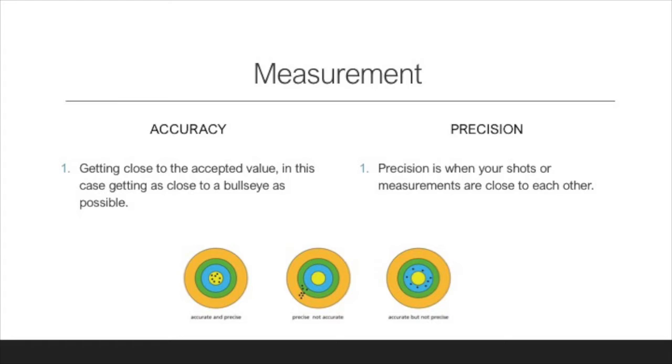Accuracy and precision in measurement. Accuracy is getting close to the accepted value, in this case, getting as close to a bullseye as possible. Precision is when your shots or measurements are close to each other. Thanks for watching.